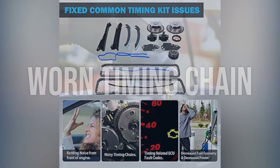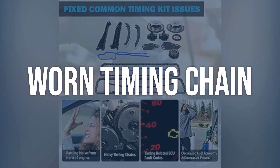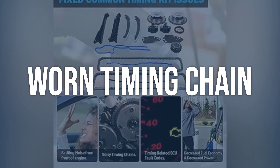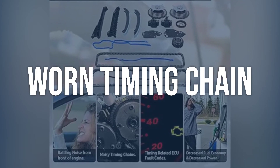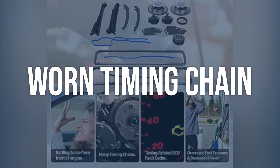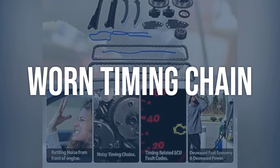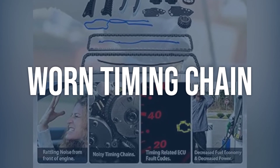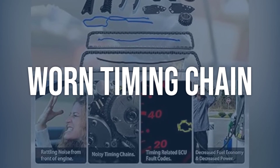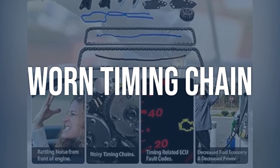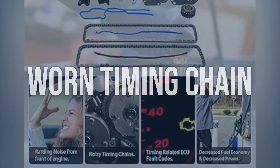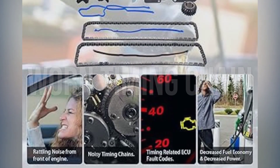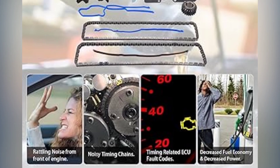Cause 5: Worn timing chain. Visually inspect the timing chain for any signs of wear or damage. Listen for any unusual noises coming from the engine, which could indicate a timing chain issue. Replace the worn timing chain with a new one to ensure proper engine timing and functioning of the variable timing system. It is recommended to have a professional mechanic perform this repair due to the complexity of the timing chain replacement.